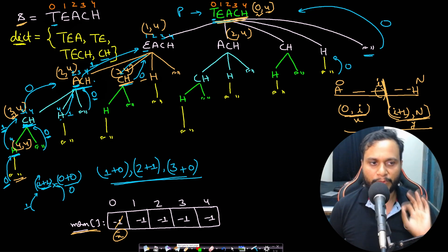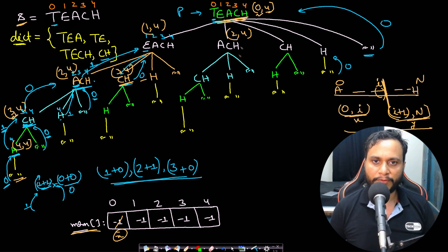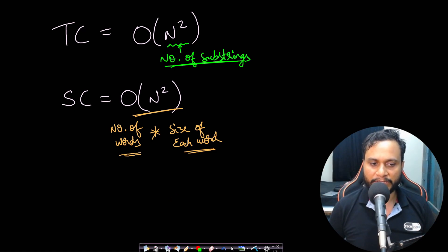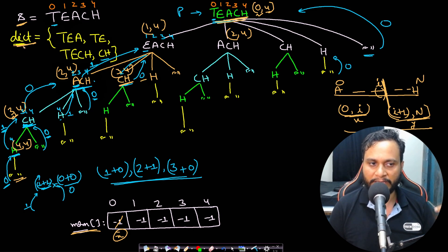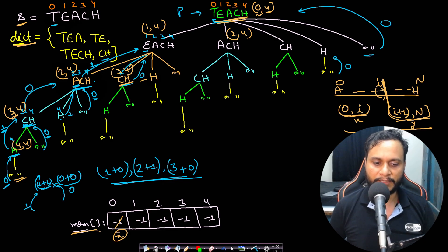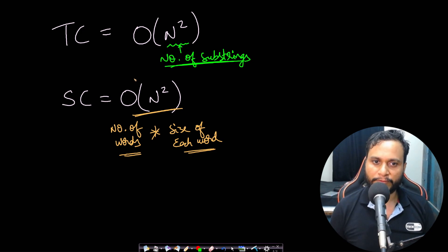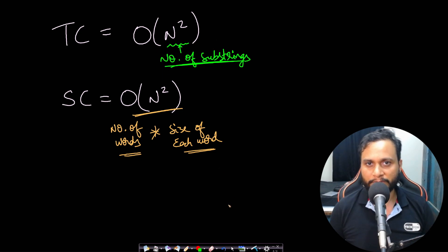For time complexity: there are O(n²) possible substrings, so there are O(n²) subproblems. Time complexity is O(n²). Space complexity is also O(n²) because we store all dictionary strings into an unordered set. In an unordered set, search time ranges from O(1) average to O(n) worst case; taking O(1) average gives overall O(n²) time complexity.